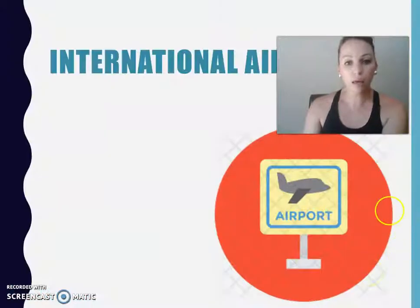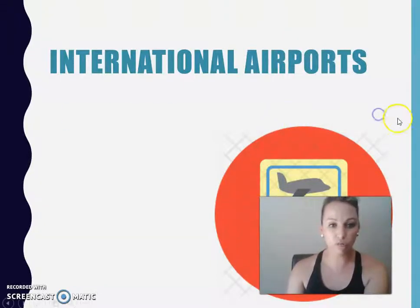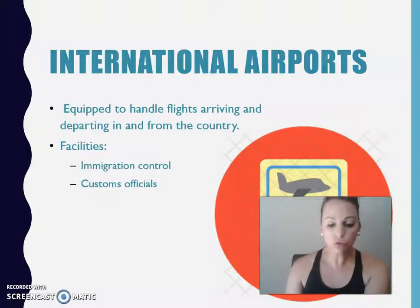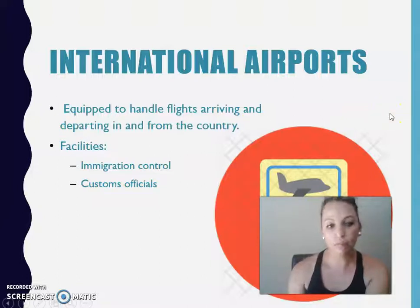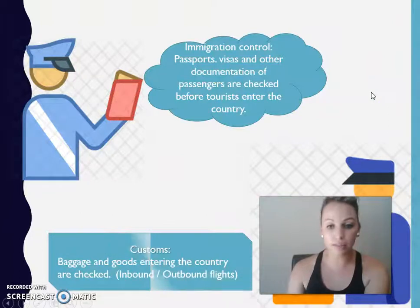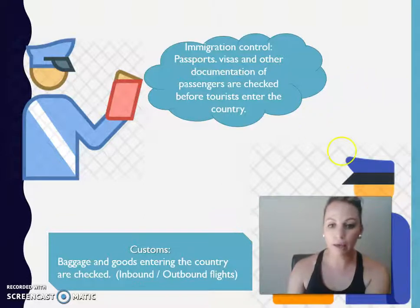An international airport handles all international flights arriving and departing between countries. Two important terms you need to know are immigration control and customs officials. Immigration control checks documentation such as passports, visas, and other documents like health certificates. Customs officials look at tourists' baggage and the goods they are taking with them on their flight.